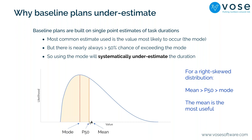Because the distribution is skewed right, the P50 — the value you have a 50% chance of being above or below — always sits above the mode. So if you use your best-guess mode estimate for task duration or cost, you have less than a 50% chance of achieving it, and therefore a greater than 50% chance of going over.